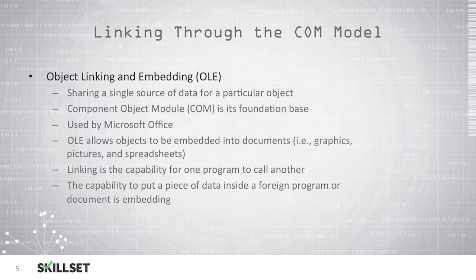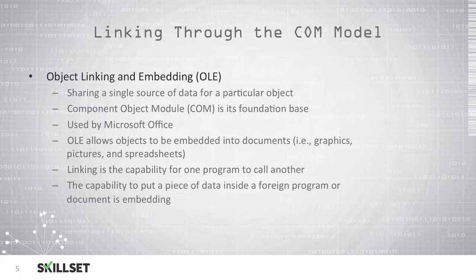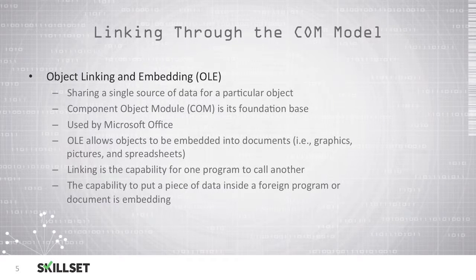Object Linking and Embedding allows a single source of data to be shared for a particular object. It is based on COM and used frequently by Microsoft Office. It allows objects to be embedded into documents such as spreadsheets, pictures, and graphics. Linking is the ability for one program to call another program, and this provides the ability to place a piece of data inside a foreign program or document, which is known as embedding.